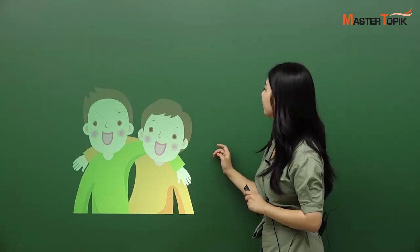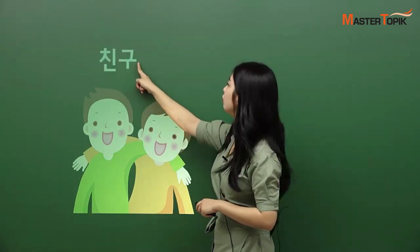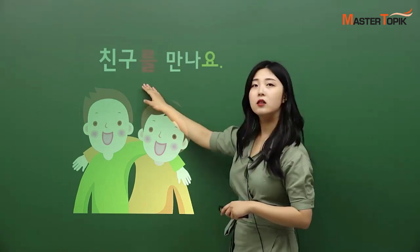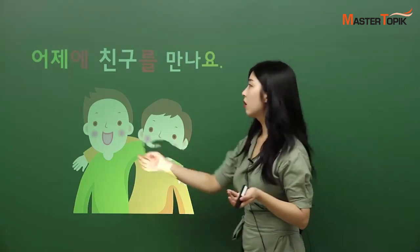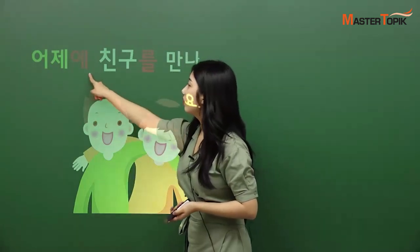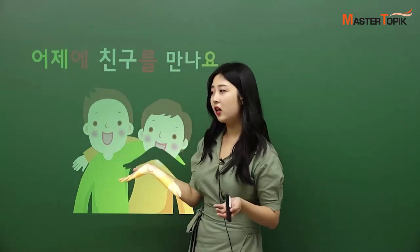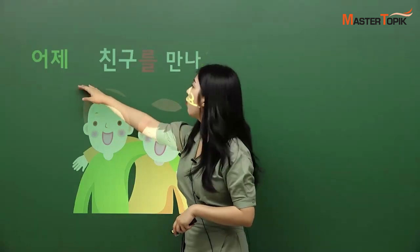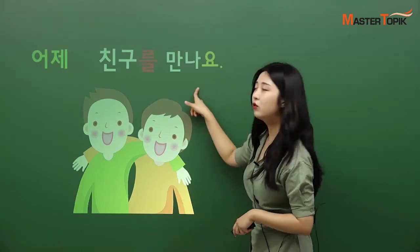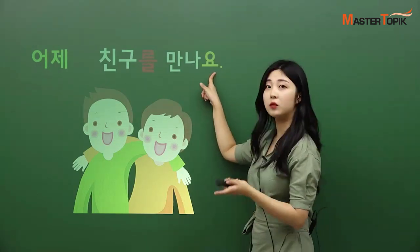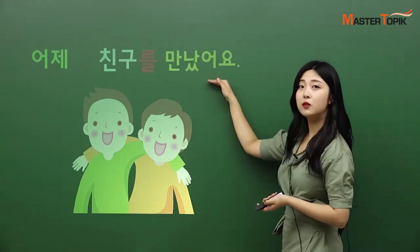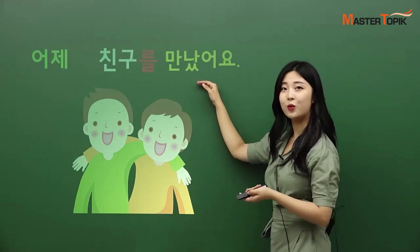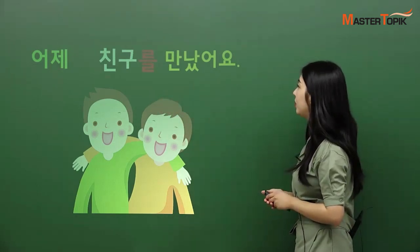친구 — 친구. 만나다. 친구를 만나요. 언제? 어제. But do Koreans put 에 after 어제, like 주말에 or 월요일에? No, we don't put 에 after 어제 — we just use 어제. And we have to change to past tense because 만나요 is present: we use 만났어요. 어제 친구를 만났어요 — 'I met up with my friends yesterday.' It's in the past.